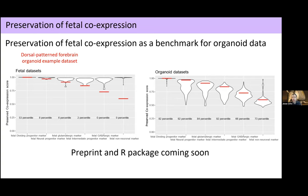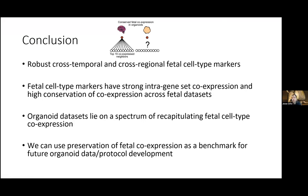In conclusion, we see really robust cross-temporal and cross-regional fetal cell type markers. This defines gene set co-expression we can use to find well-conserved programs across all fetal data. Organoid data is variable — lying on a spectrum from actually recapitulating fetal cell type co-expression to not recapitulating it very well — and we can use co-expression as a way of measuring, benchmarking, or quality-controlling organoid data. We hope this creates a virtuous cycle where people do experiments and check back to see what worked, generating useful statistics.